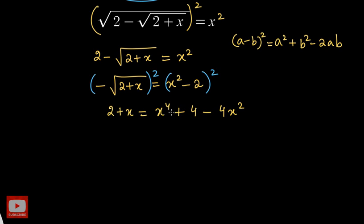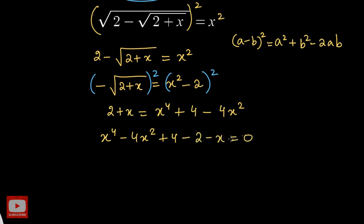We now have an equation of degree 4 — a quartic equation. Bringing 2 plus x to the right side and writing terms in decreasing degree order: x⁴ − 4x² − x + 2 = 0. Although a quartic formula exists, it is very complicated. Fortunately, we can solve this equation by factorization.